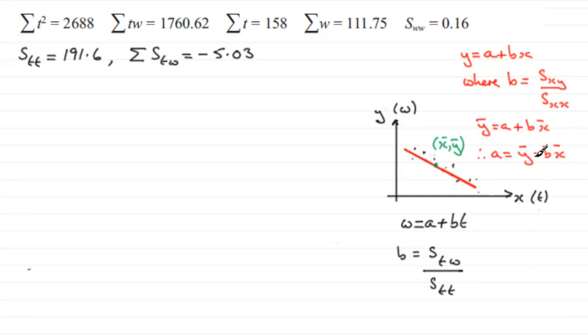And when it comes to working out what a was, a is equal to, instead of the mean of y, it will be the mean of the w value, so w bar minus b, the value obviously that we've just worked out here, times what was x bar is now t bar, the mean of the t values. So there's a little bit of background, and you could work out these values, substitute them into here, and you've got the regression line.